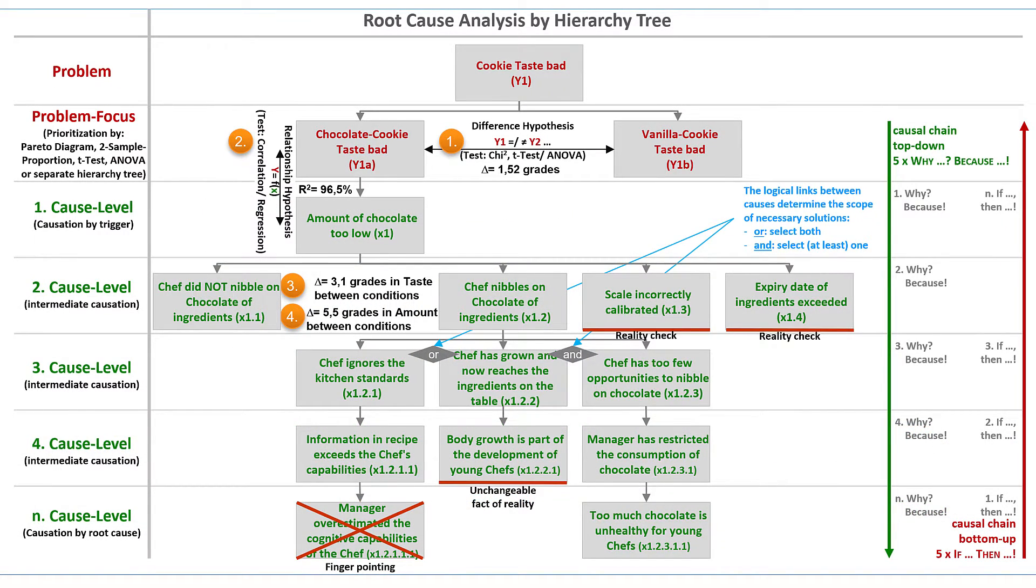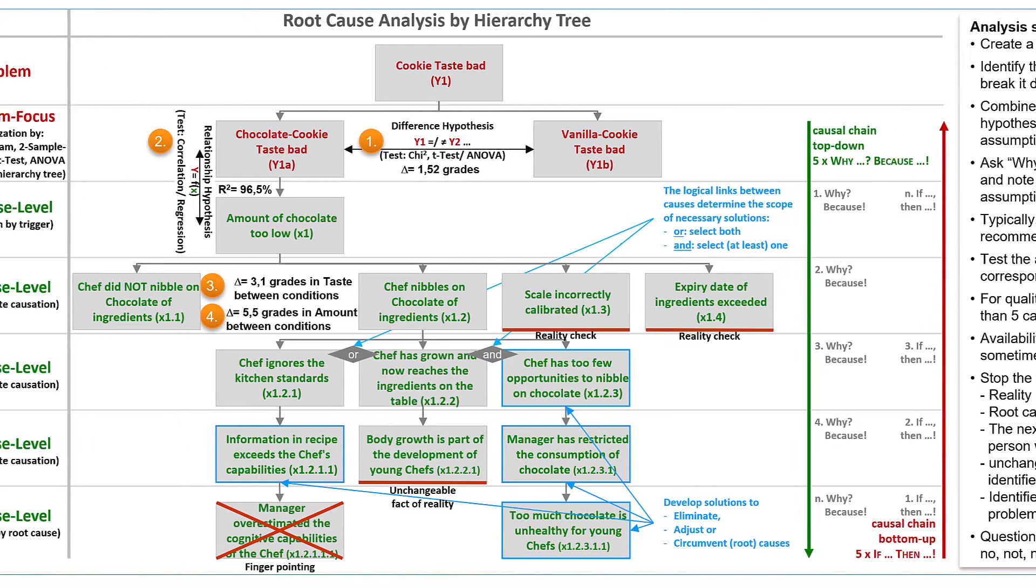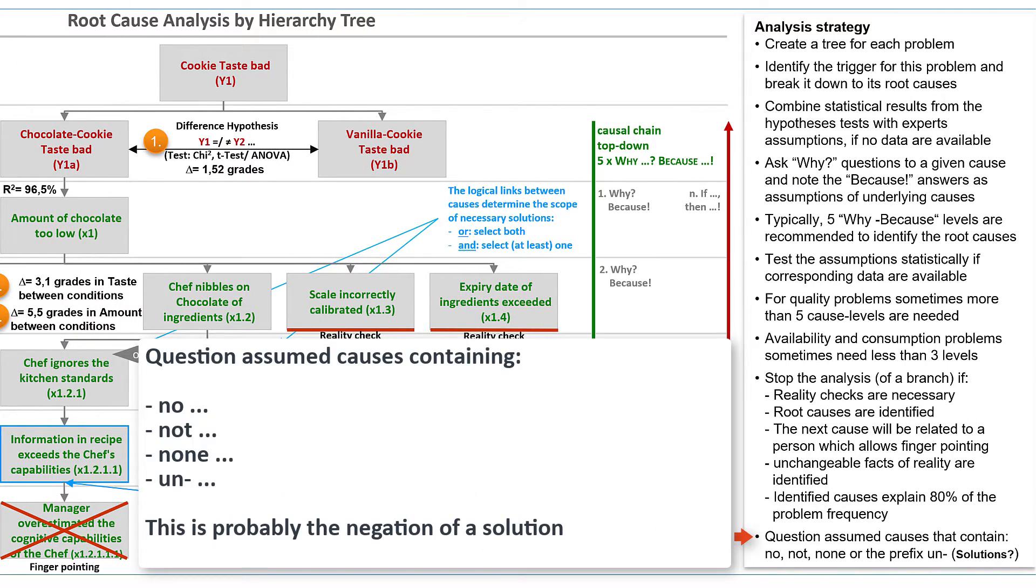Root causes are the interfaces for solutions. Wrong causes lead to wrong solutions. And the two examples show how important the identification of real causes is for the development of solutions. So please note, if an assumption is made about a cause that contains no, not, none, or the prefix un, then it is likely that an implicit proposal for a solution is made.